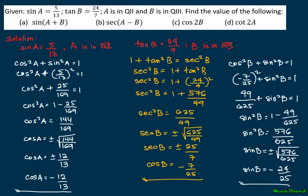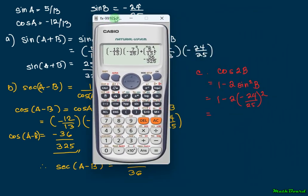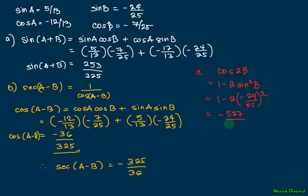Next we have cosine 2B. To solve for cosine 2B, we can use any of the three double-angle formulas. We'll use 1 minus 2 sin squared B. So that is 1 minus 2 times (negative 24 over 25) squared, which gives 1 minus 2 times 576 over 625, and the answer is negative 527 over 625.